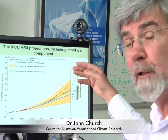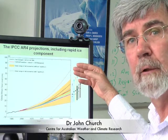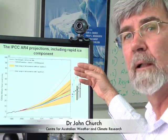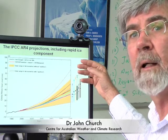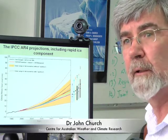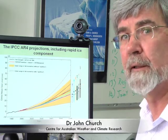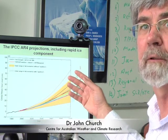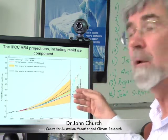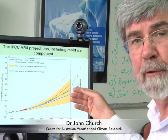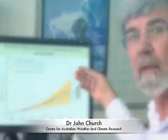The projections at the upper end, up to about 80 centimetres — or potentially more if there's a larger response from the ice sheets — are associated with larger emissions of greenhouse gases into the atmosphere. So this is a choice that our society can make between lower emissions and lower sea levels, or higher emissions and higher sea levels.